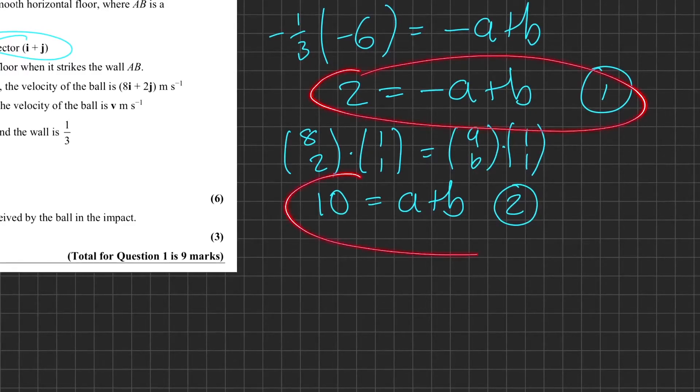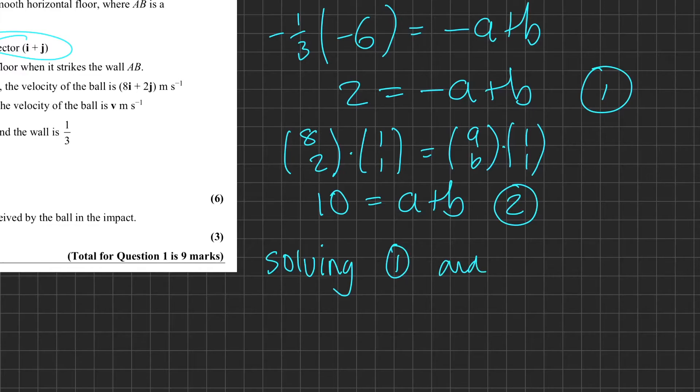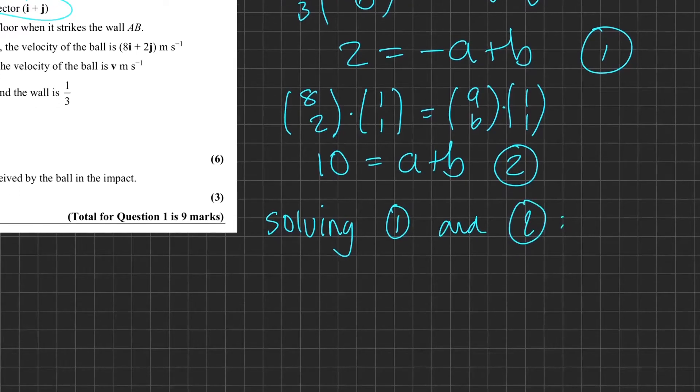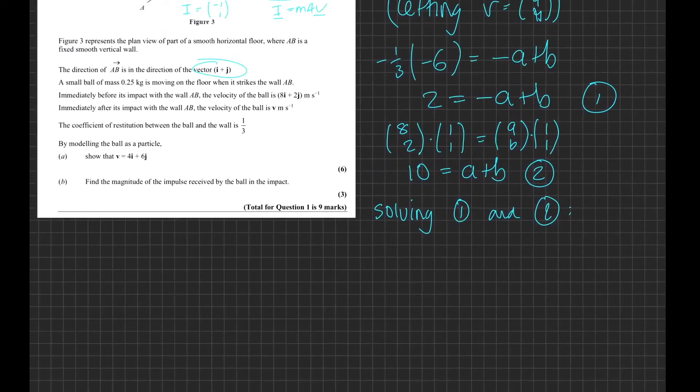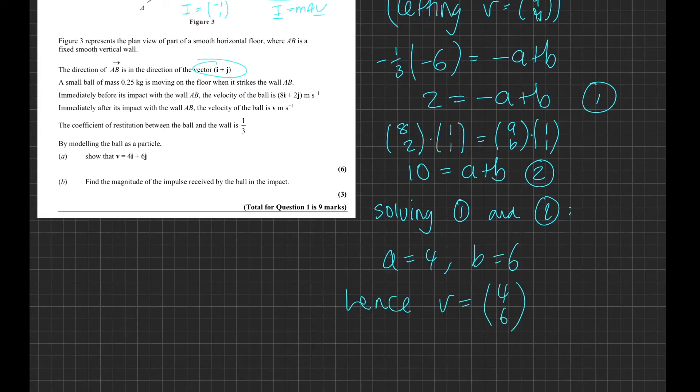And that is our second equation here. Now as you can see, we now have two equations with just a and b, and so we can solve these simultaneously. When we solve these, we can put them into our calculator, and we are going to get a = 4 and b = 6. Hence the velocity after the collision is (4,6).